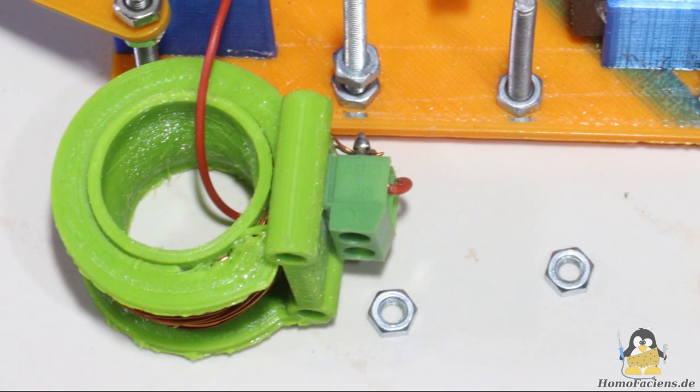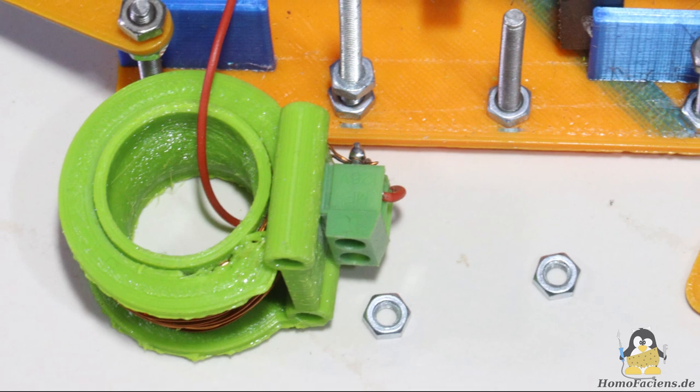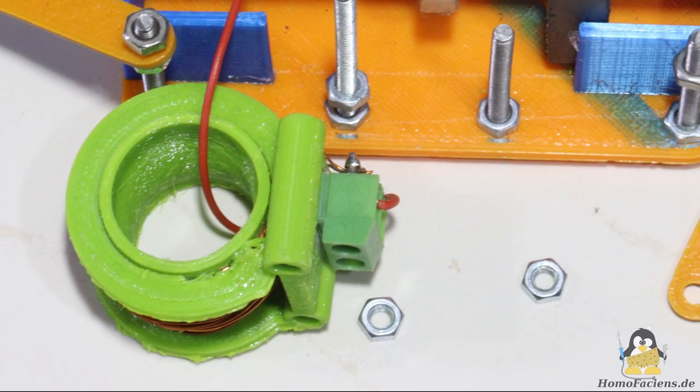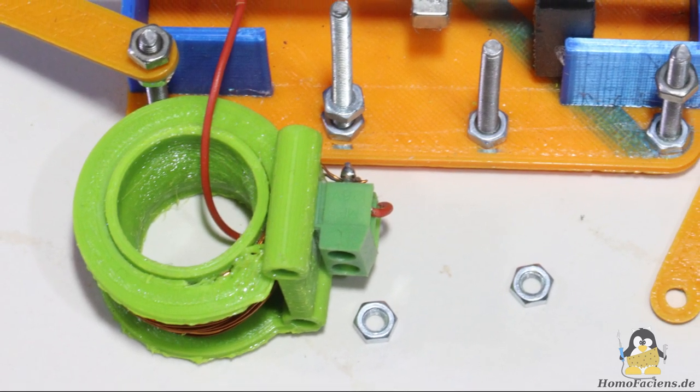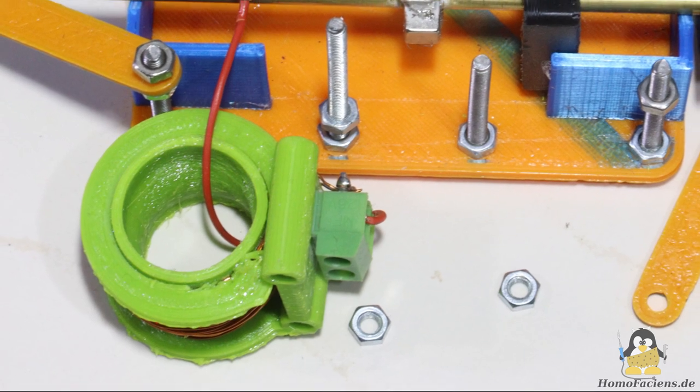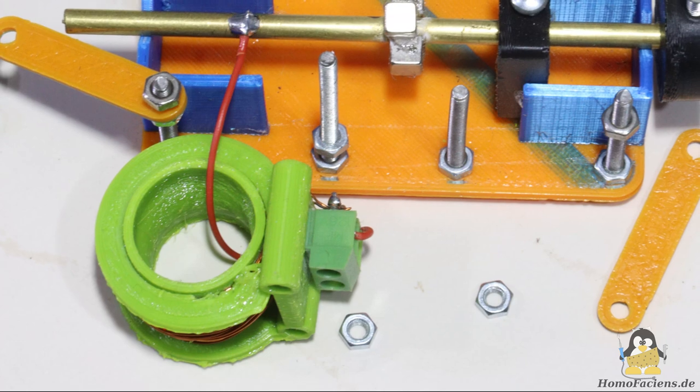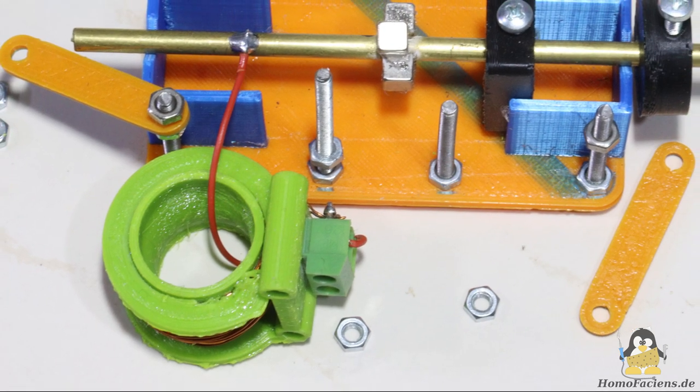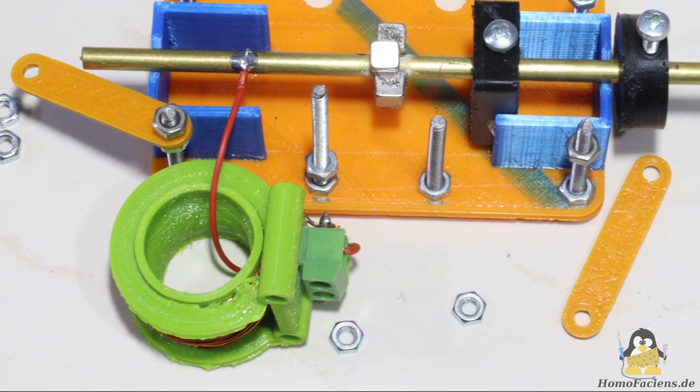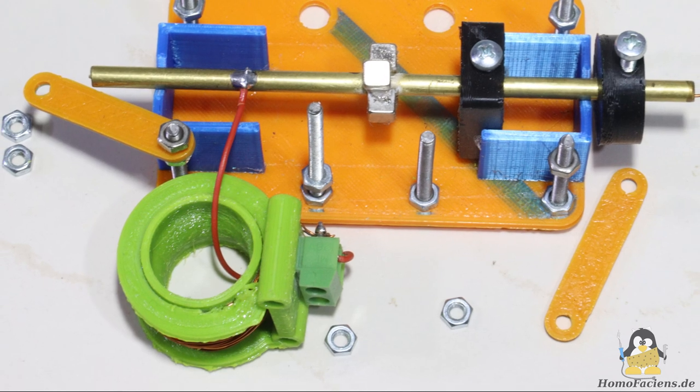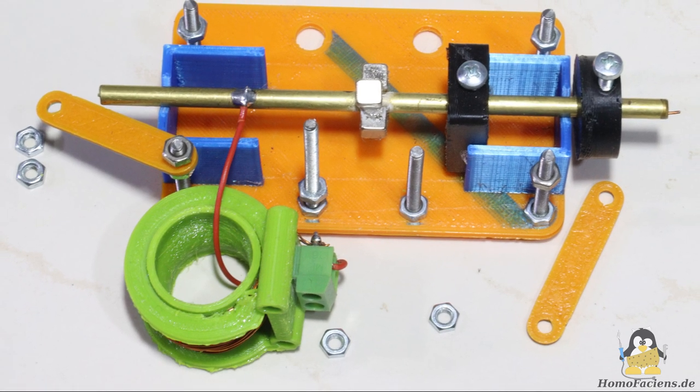My first implementation of this principle consists of a 3D printed core onto which 100 turns of 0.35mm enameled copper wire was wound. A guide for a 4mm press tube is integrated into the frame. Four cube-shaped magnets are glued to the press tube, all with their north poles pointing upwards.